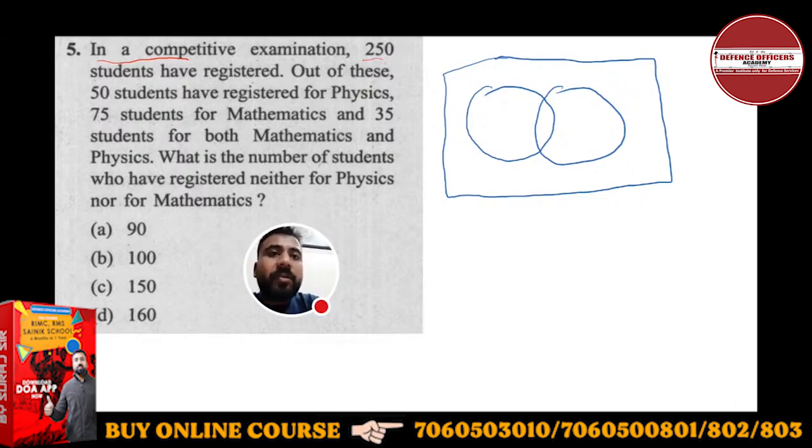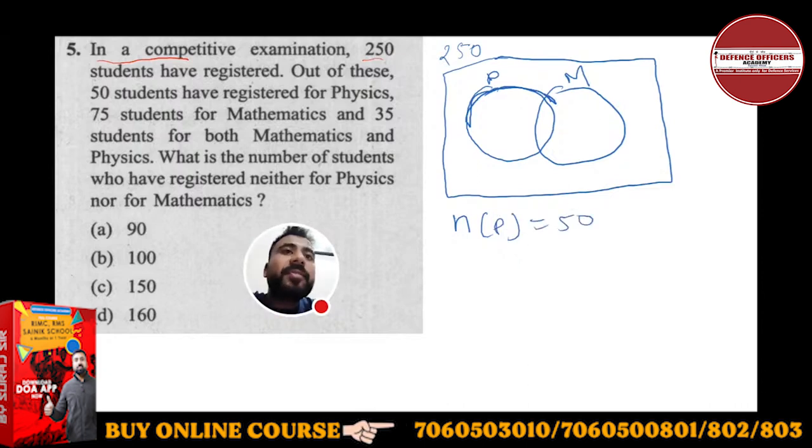What is given to you? 250 are the total students. This rectangular universal set of total 250 students. Out of these, 50 students have registered for Physics. Now you have to remember one thing that this P, this complete P is given 50 to you. I will write this way: n of P is equal to 50, and n of M mathematics, number of students in mathematics is 75 given to you.